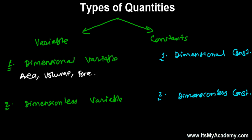There are a lot of such quantities. For example, force, work done, energy, acceleration, velocity — they all have dimension as well as their value is variable. Work done is sometimes 25 joules, it may be 35 joules next time, or 3500 joules, or even 35 billion joules — it can be anything. So the value is variable and still they have dimension.